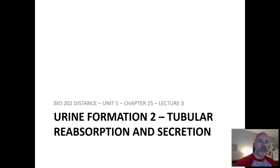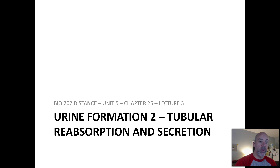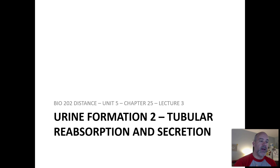In the third lecture for Chapter 25, we're going to continue our story about how urine is formed in the kidneys. In the last video lecture, I mentioned that there were three key steps to urine formation. One of those is glomerular filtration, where water and most solutes get squeezed out of the blood passing through the glomeruli and that filtered fluid gets captured inside the glomerular capsules.